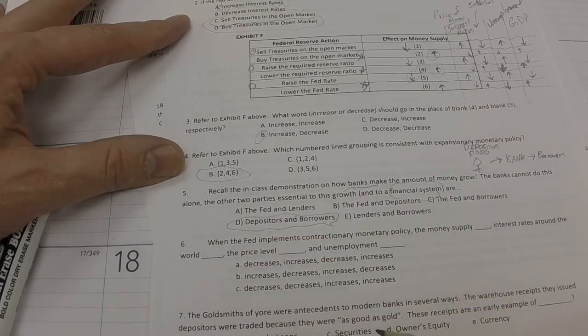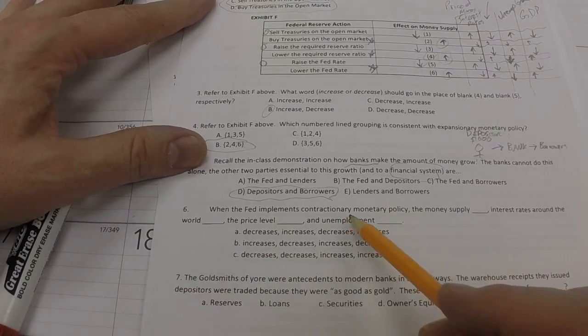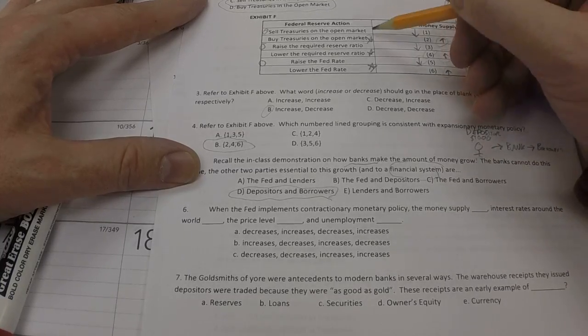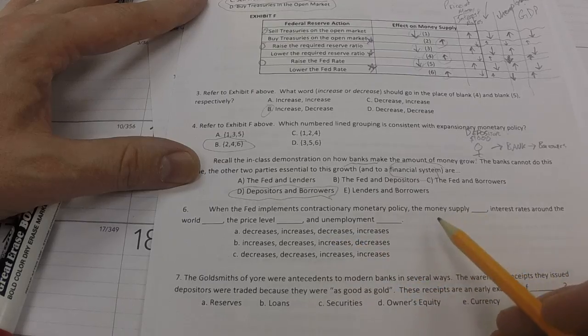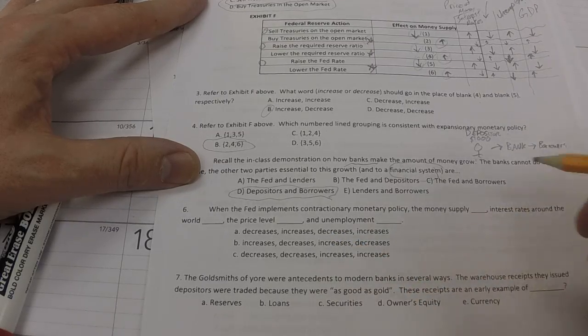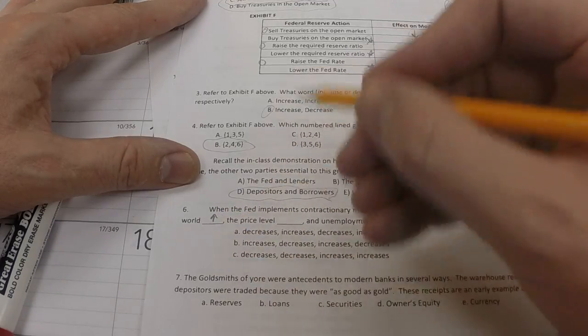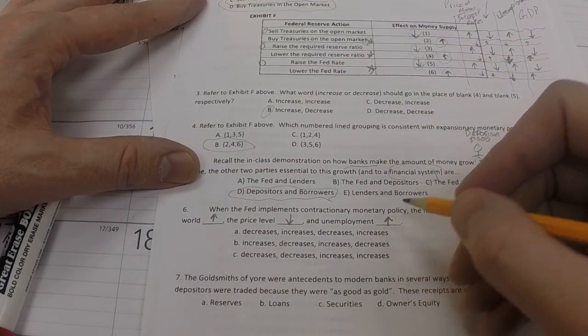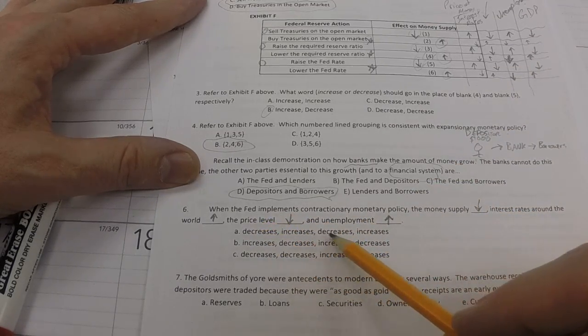When the Fed, number six, when the Fed implements contractionary monetary policy. And there we are. We can go back up to the top here. Contractionary monetary policy would be any of these. The effect on the money supply decreases. The interest rates around the world increase. The price level decreases. And unemployment increases. So what are we looking for? Down, up, down, up.